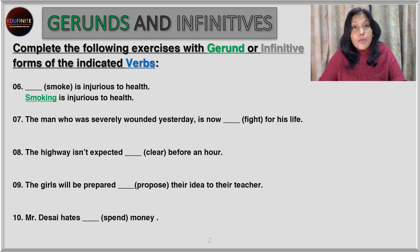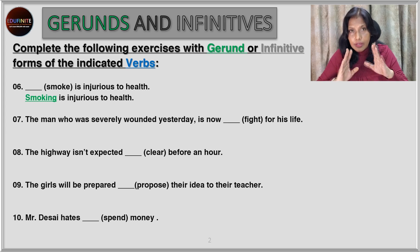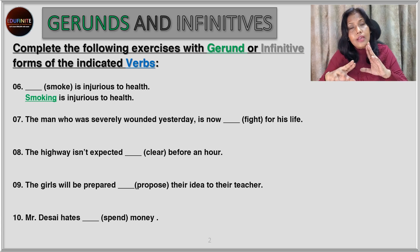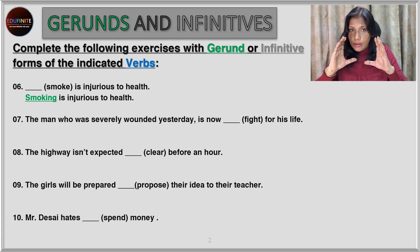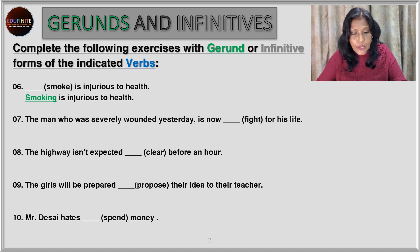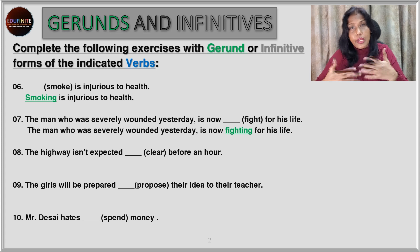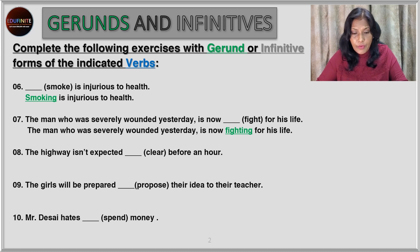The answers: Smoking is injurious to health. Whenever the verb is the subject of the sentence, we use the gerund form — 'smoking', not 'to smoke'. It's about the act as a whole: if you smoke, that is not good for health. Next: the man who was severely wounded yesterday is now fighting for his life — the gerund form again, describing the ongoing action. Next: the highway isn't expected to clear before an hour. Again, after '-ed', we have the infinitive form — 'to clear', not 'clearing'.